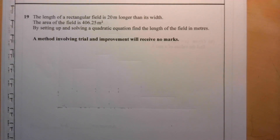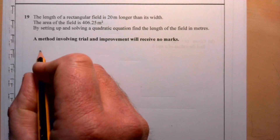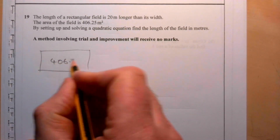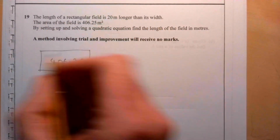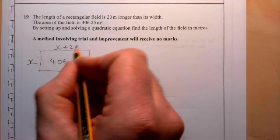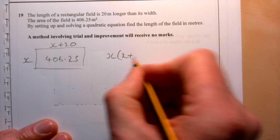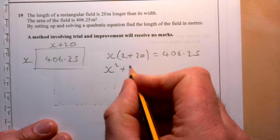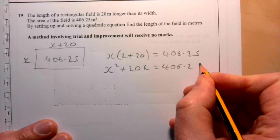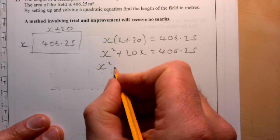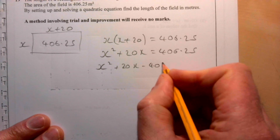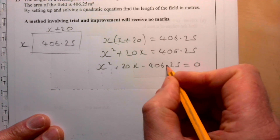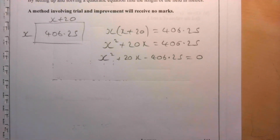Question nineteen: A rectangular field is 20 metres longer than its width, and its area is 406.25 square metres. Setting width as x and length as x plus 20, we get x times (x plus 20) equals 406.25, which gives x squared plus 20x minus 406.25 equals zero.